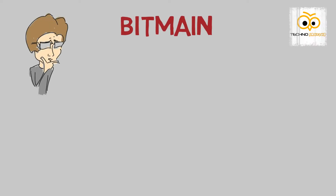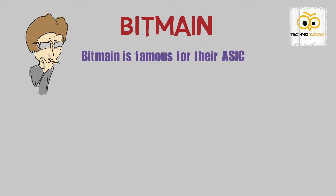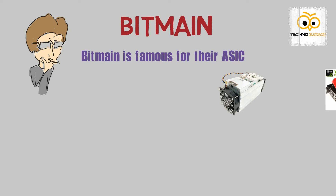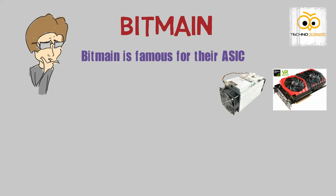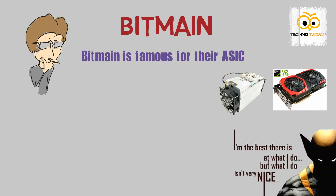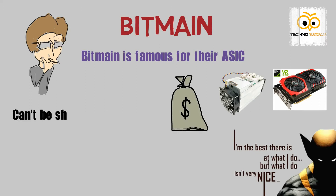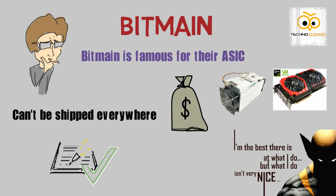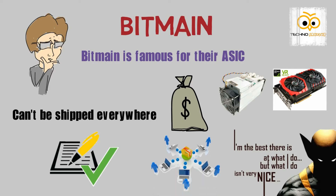Let's discuss Bitmain. Bitmain is famous for their ASICs — specialized hardware designed to do a specific task, unlike graphics cards. ASICs are pretty expensive and can't be shipped everywhere due to tax and regulation, which defeats the purpose of decentralization.